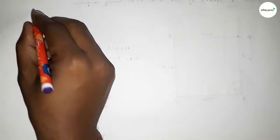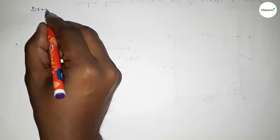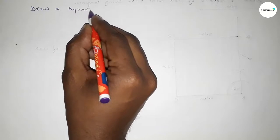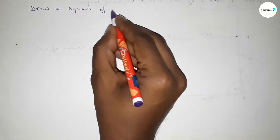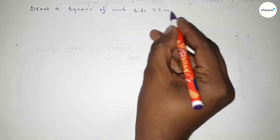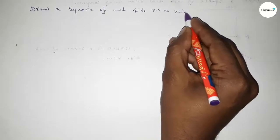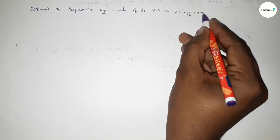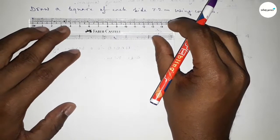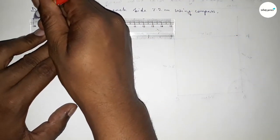Hi everyone, welcome to Essay Share Classes. Today in this video we have to draw a square of each side 7.2 centimeters using a compass. So let's start the video. First of all, we have to draw here a line of length 7.2 centimeters.